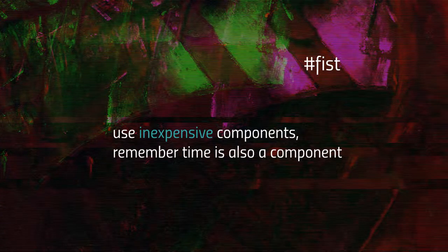The second part of hashtag FIST is inexpensive, and it stands for in general using inexpensive components. However, you also need to remember that time is a key component in each and every project, so you need to think of inexpensive also in terms of the time element involved. Cost is an obstacle in general which can derail your project, and it doesn't matter what kind of cost that is — it might be the cost of a camera, the cost of a microphone, or the time cost associated with producing your YouTube series. The rule of thumb is that you need to factor in at least two hours of work, I would say even more, for every 15 minutes of footage that you create as video.